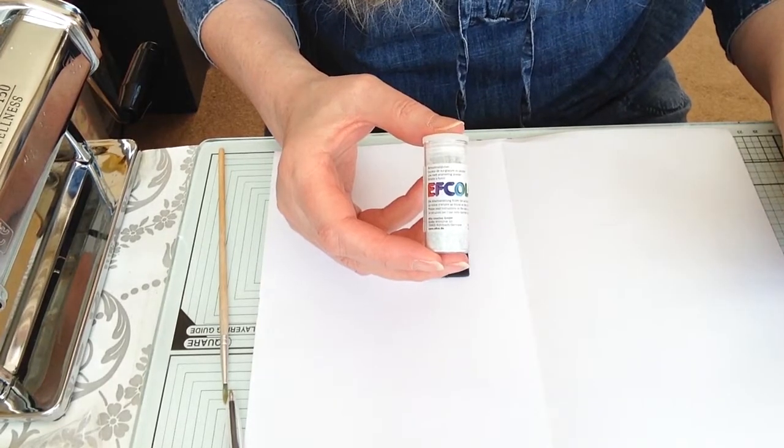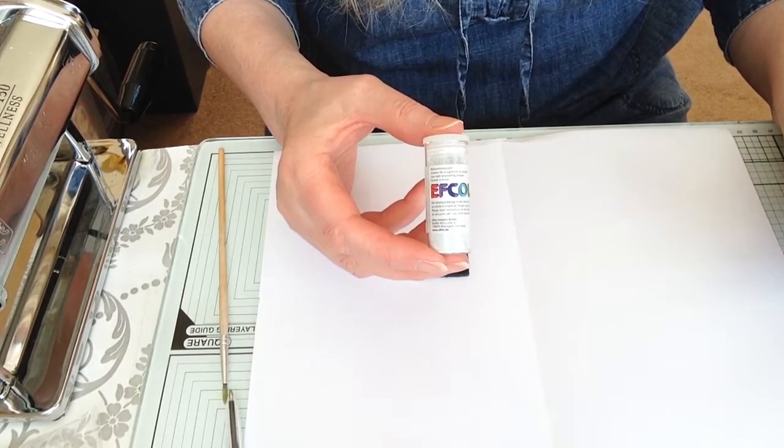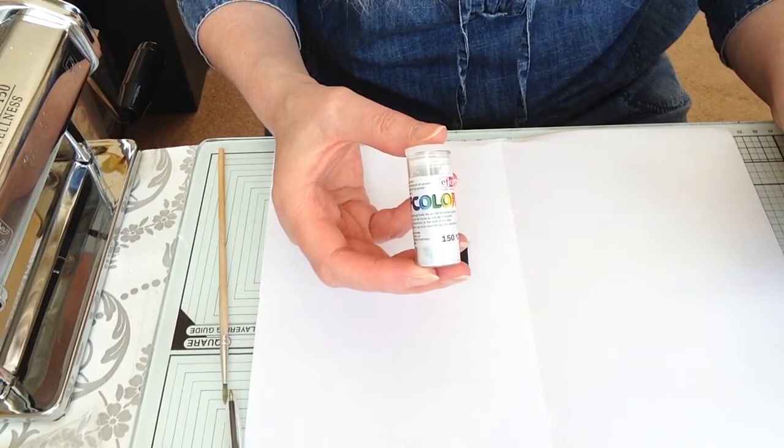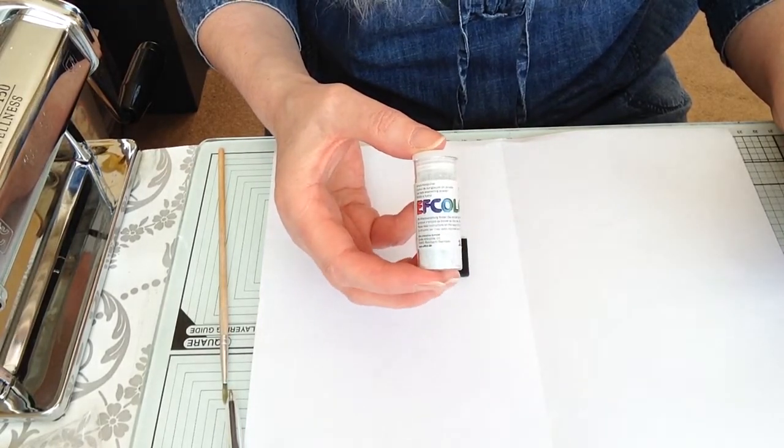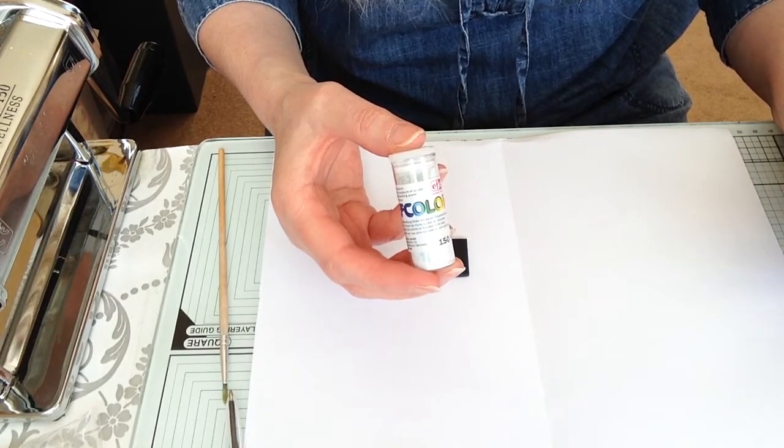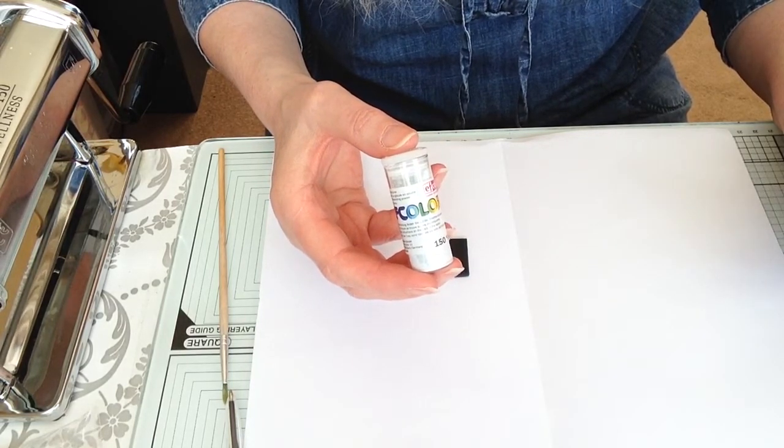Hello there, today I would like to give you a quick demonstration on the EF colour, and this is a low temperature enamel. This one here is the turquoise glitter and the number for it, which you can get from cooksongold.com, is 861351.